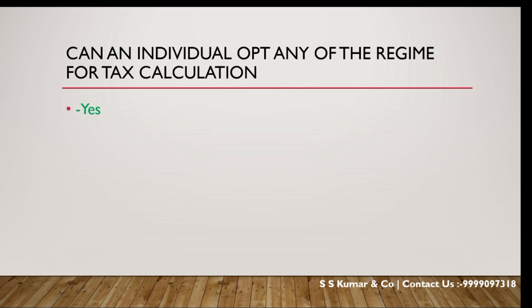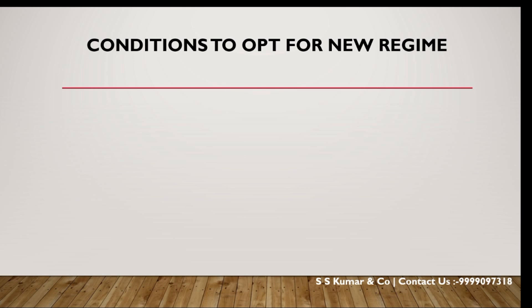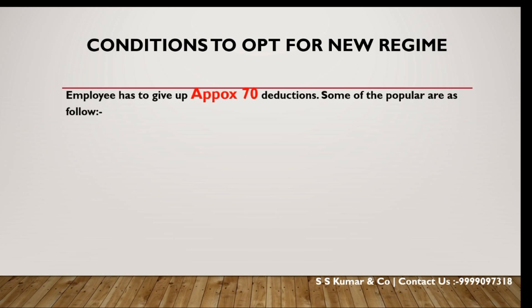If we have this alternative, we will give a declaration to our organization's accounts department regarding the TDS provision, so they can calculate your tax liability on the basis of the same. If you want to opt for the new regime as an individual or as an employee, there are certain conditions. Under the new regime, you give up approximately 70 deductions.